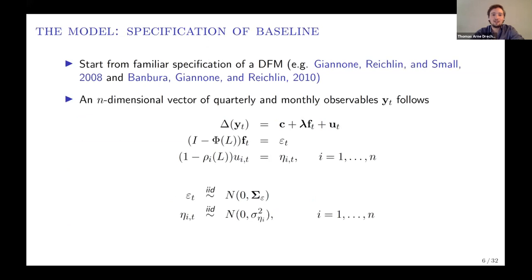To introduce the model, let's start from a very familiar dynamic factor model used in the literature to nowcast economic activity. We have a vector of observables that can be both quarterly and monthly. These observables typically enter the model in first differences, and they are described as being driven by a common factor and an idiosyncratic component. Both the common factor and the idiosyncratic component follow an autoregressive process.